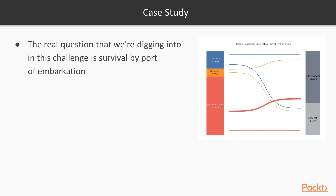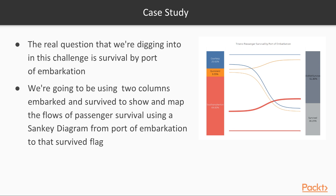What do we need to do? The real question we are digging into in this challenge is survival by port of embarkation. We are going to be using two columns — Embark and Survive — to show and map the flows of passenger survival using a Sankey diagram, from port of embarkation to the survived flag.